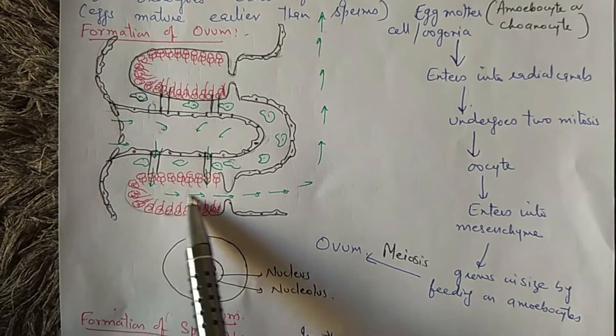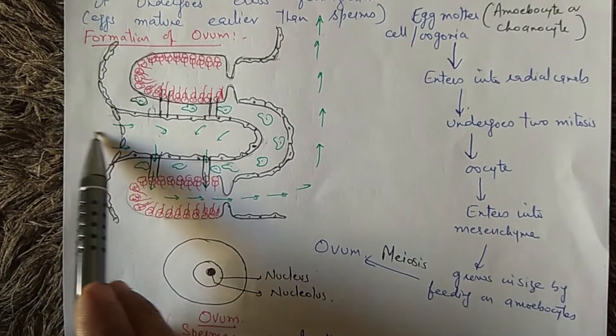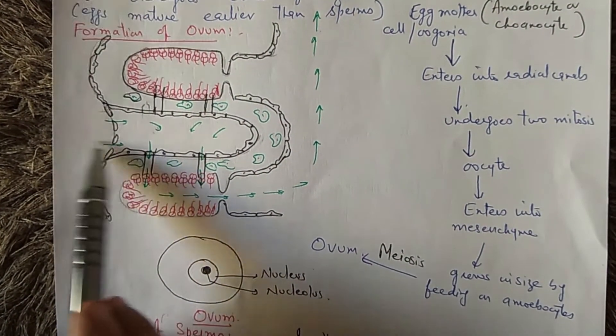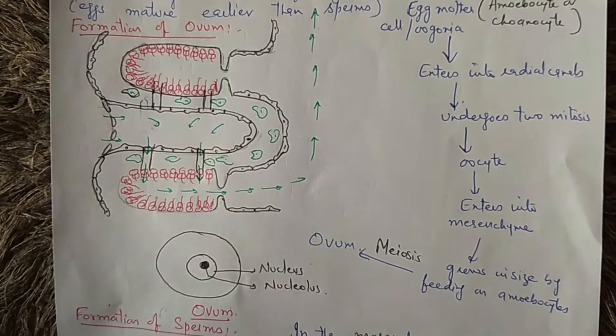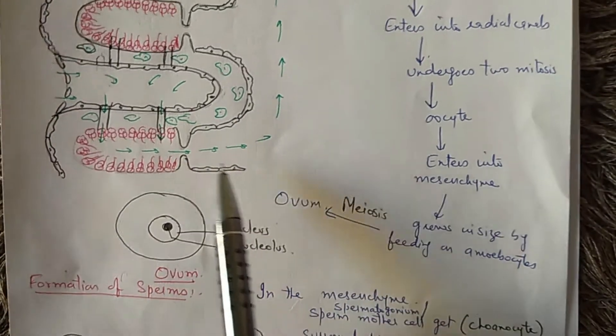The sperms of one organism leave the body through outgoing water current, and sperms of some other animal enter into the body of scypha through incoming water current. So when these sperms enter the radial canals, then what happens?